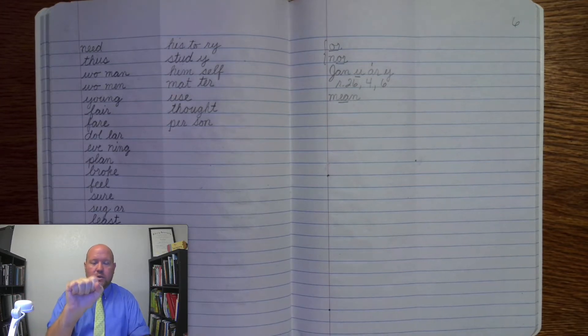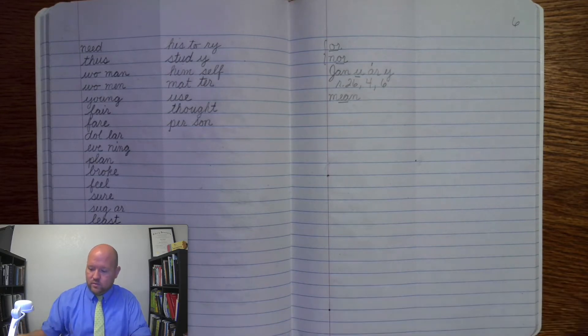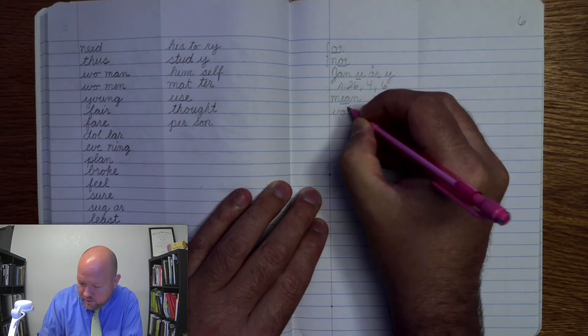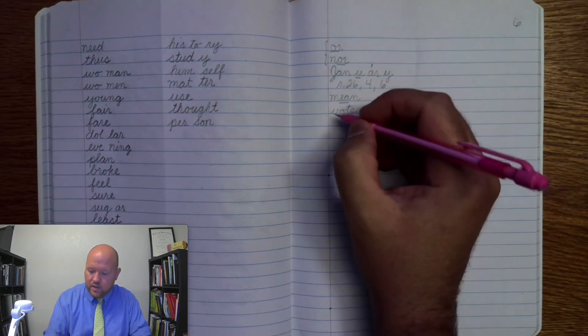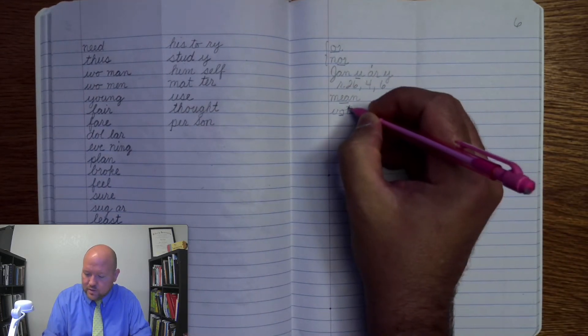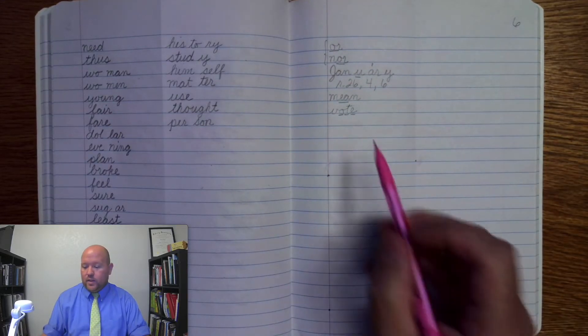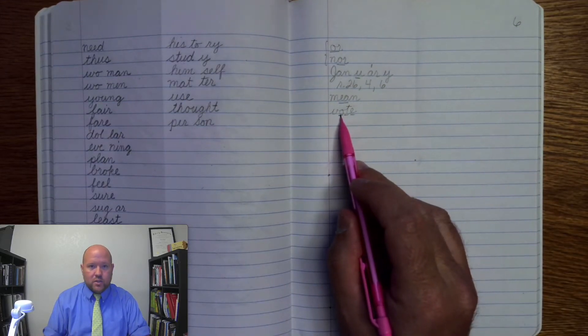Okay. So vote. Base word vote. V. O. T. E. Vote. Write it. V. O. T. E. Vote. Markings. V. O. Once. T. Once. E. Once. Okay. And so the E is letting the O say O.